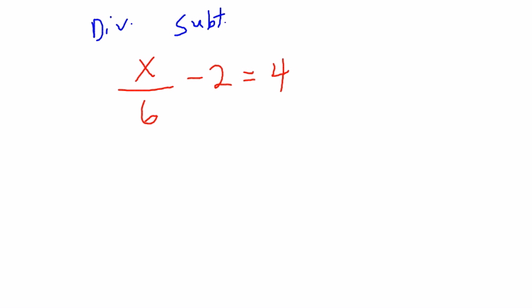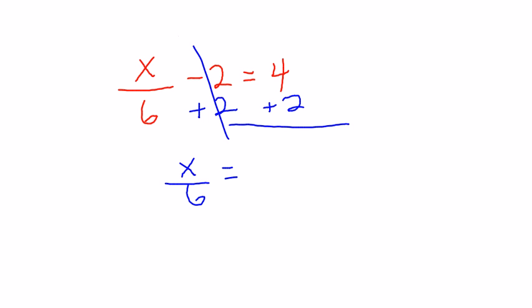So which operation will we undo first? Well, as I've stated a couple times, usually easiest to undo addition and subtraction before we undo division and multiplication. So we will undo subtraction first. What is the opposite of subtracting 2? Well, the opposite would be to add 2 on each side. On the left-hand side, negative 2 and plus 2 is a zero pair. So we are left with x over 6 equals... on the right-hand side, 4 plus 2 is 6.